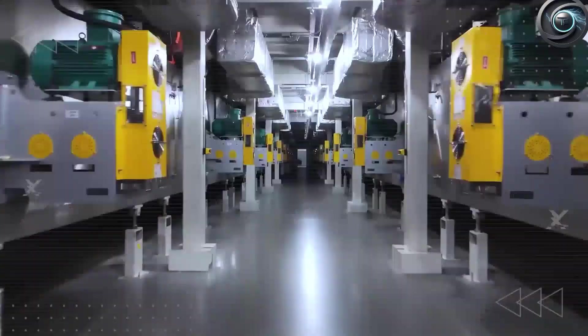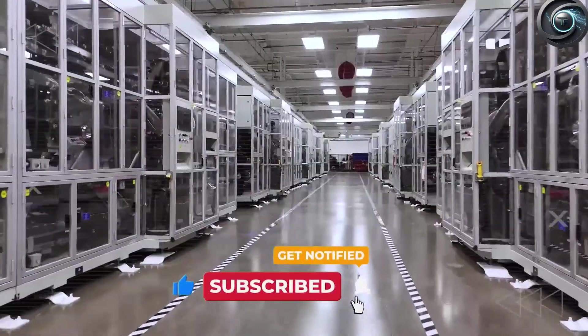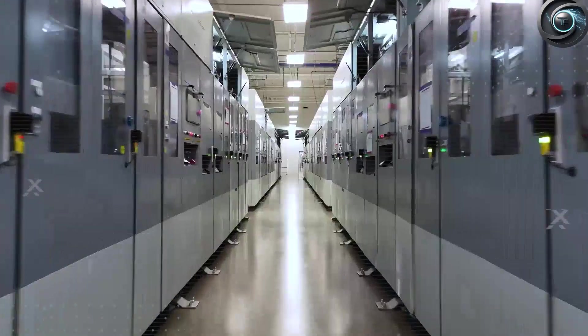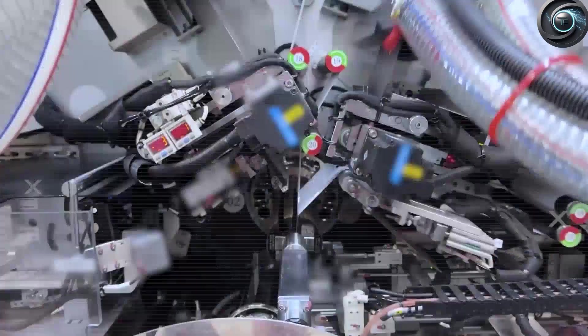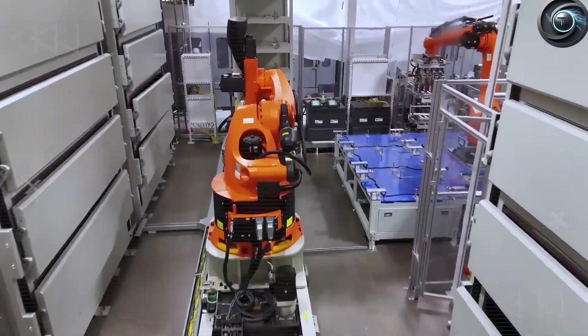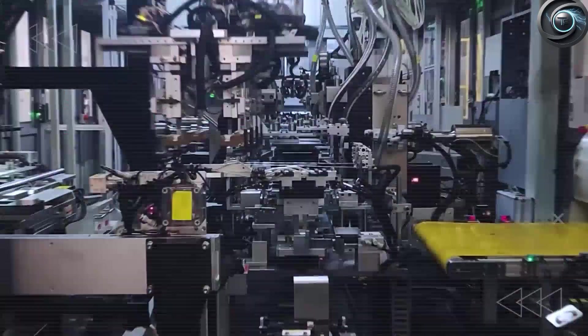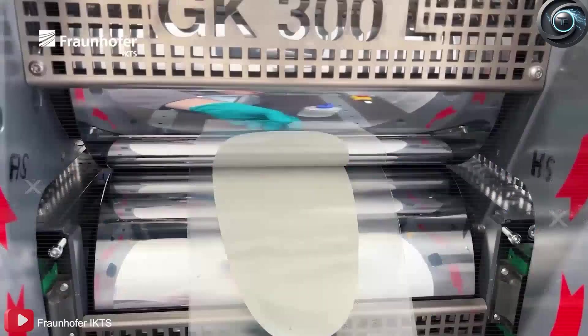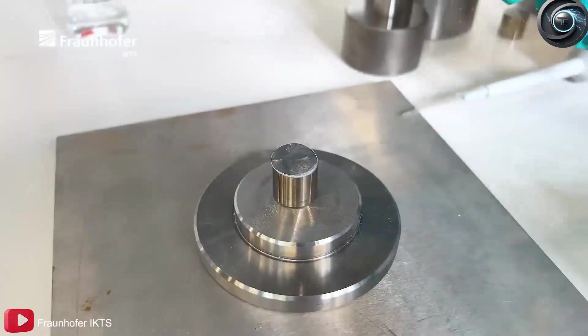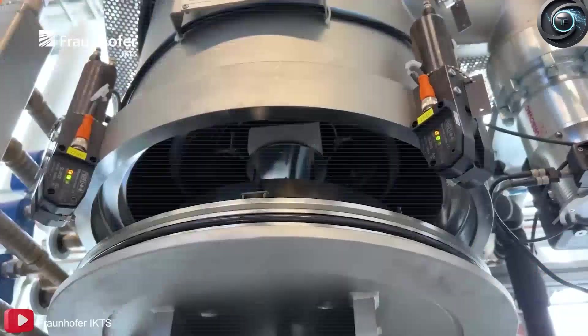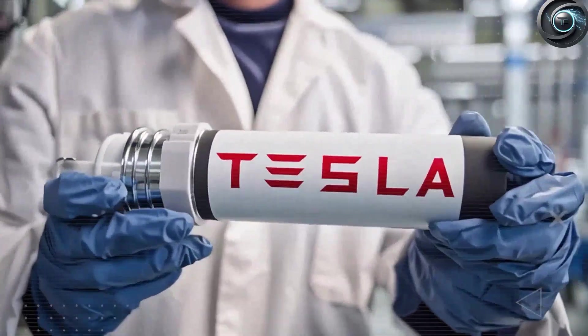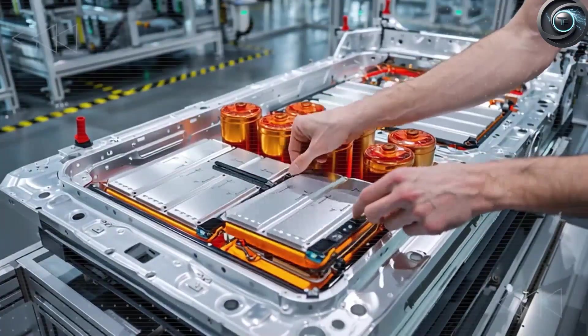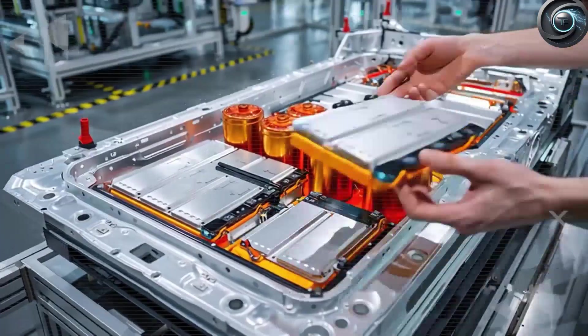Even Tesla's massive Nevada Gigafactory, which produces 35 gigawatt-hours of batteries annually, still depends heavily on Chinese refined lithium components. Building a fully independent lithium supply chain from scratch would cost tens of billions of dollars and take years to complete. That's time Tesla may not have. So the question keeping Elon Musk awake at night is simple. Can Tesla break free from China's lithium grip before it's too late? In the EV industry, second place isn't just losing. It's irrelevance.